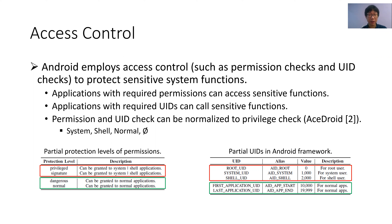Among the privilege levels except normal, system privilege is the highest one, as its corresponding permissions and UIDs are only associated with privileged system applications. The shell privilege is lower and can be gained by normal applications that are run by the shell. The normal privilege is the lowest among the three.